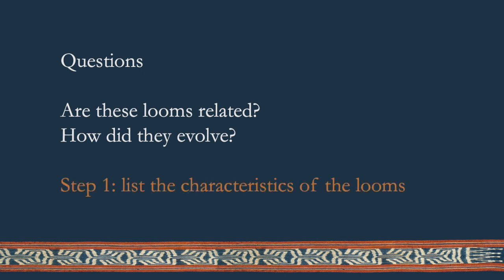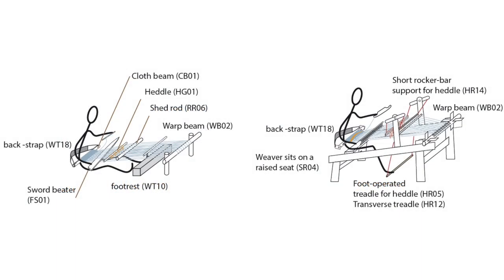The first step in this analysis is to list the characteristics of the looms. The looms are all different, but they share many features in common, such as horizontal orientation, the presence of a warp beam and a cloth beam, and the use of certain tools, such as a weft beater. Each of these characteristics is given a code.